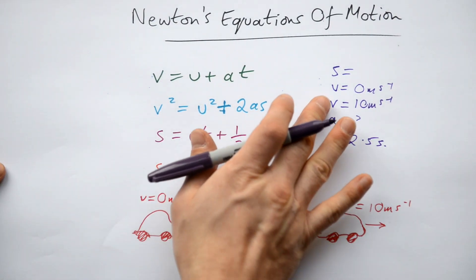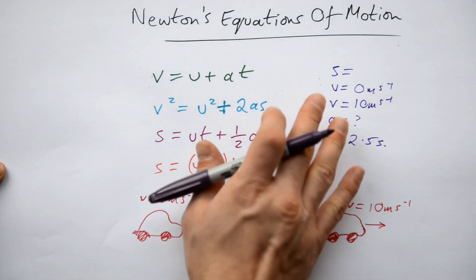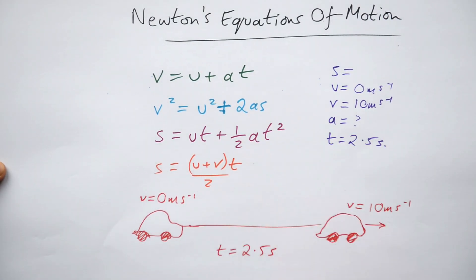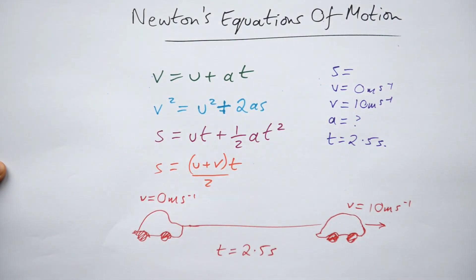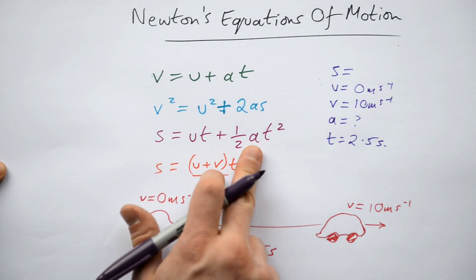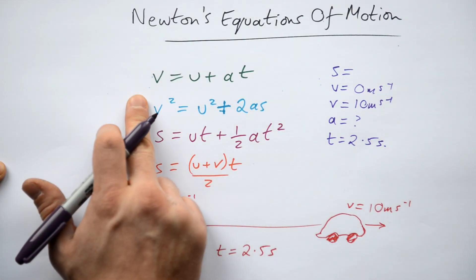So we look at what we're trying to find. Look at what we have. I have U, V, A, and T. I'm trying to find out A. Therefore, what equation am I going to use? Well, I can't use any equation that has S in, and sure enough, this one has S in, this one has S in, this one has S in, so I'm obviously going to be using this one.